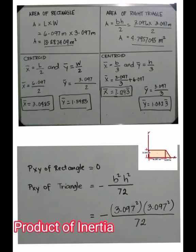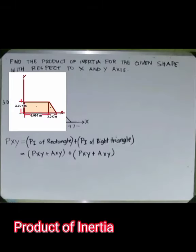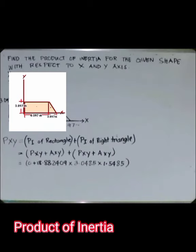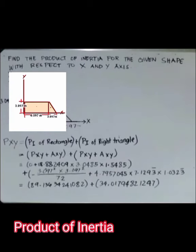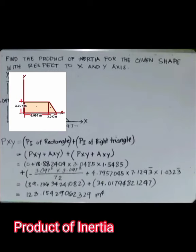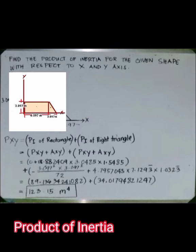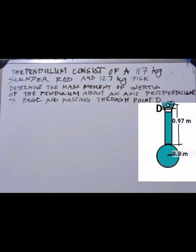The product of inertia of the triangle equals −b²h²/72. With all values known for the two shapes, the total product of inertia Ixy = 123.15 m⁴.